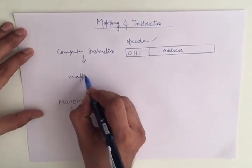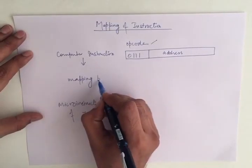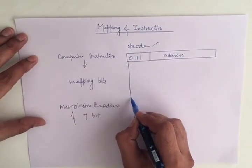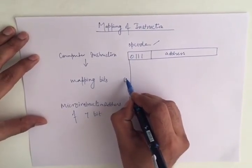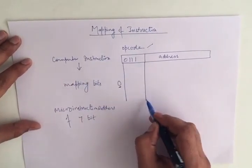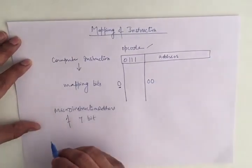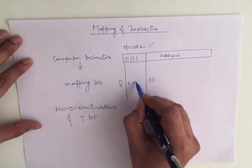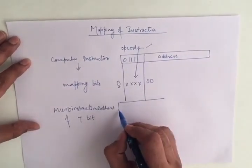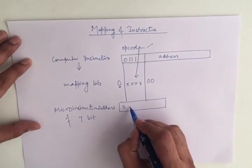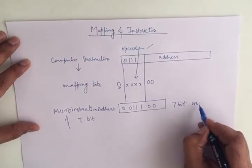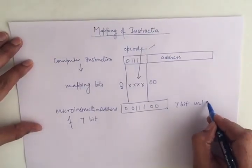There is a very simple concept. We will use mapping bits here. We will use 1 bit as 0 on the most significant bit and 2 zeros on the least significant bit. This will be your 4-bit opcode. So the resultant value will be a 7-bit microinstruction address.